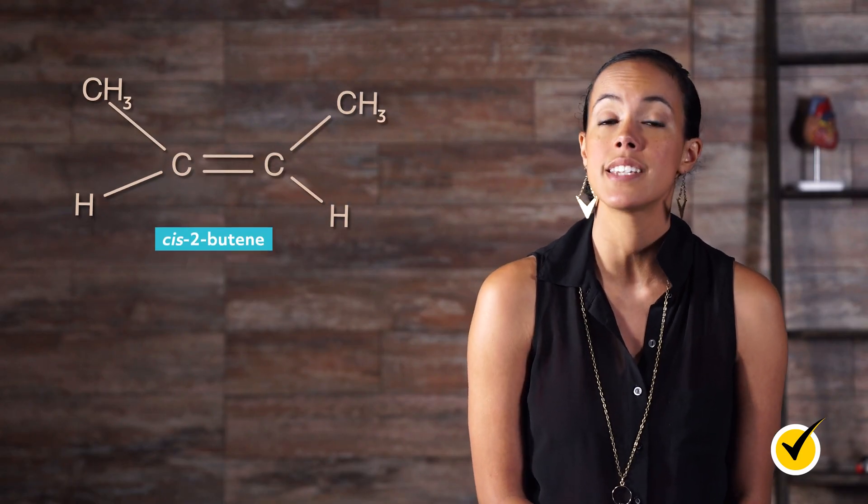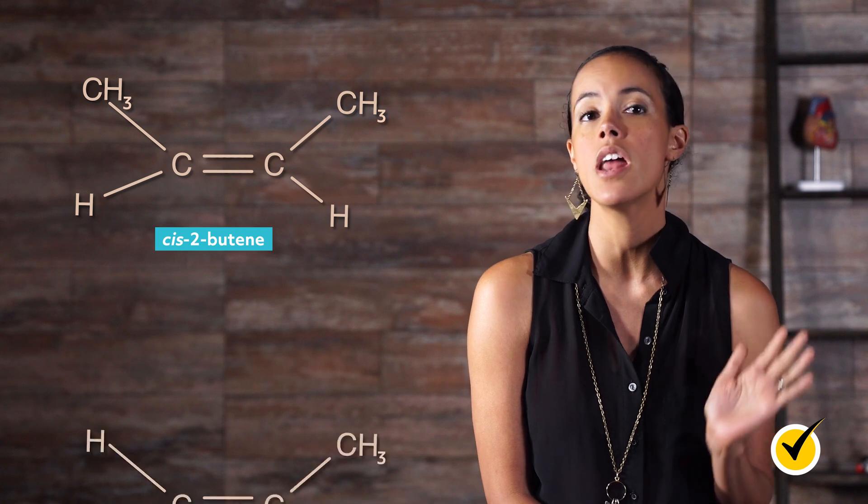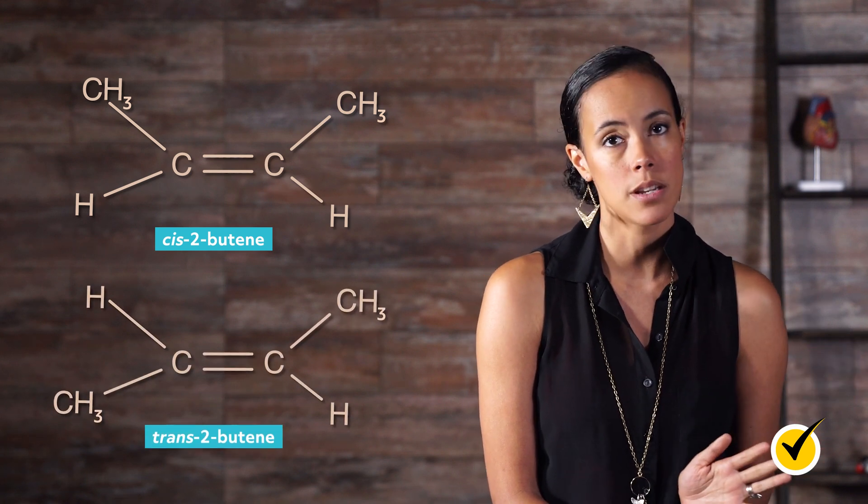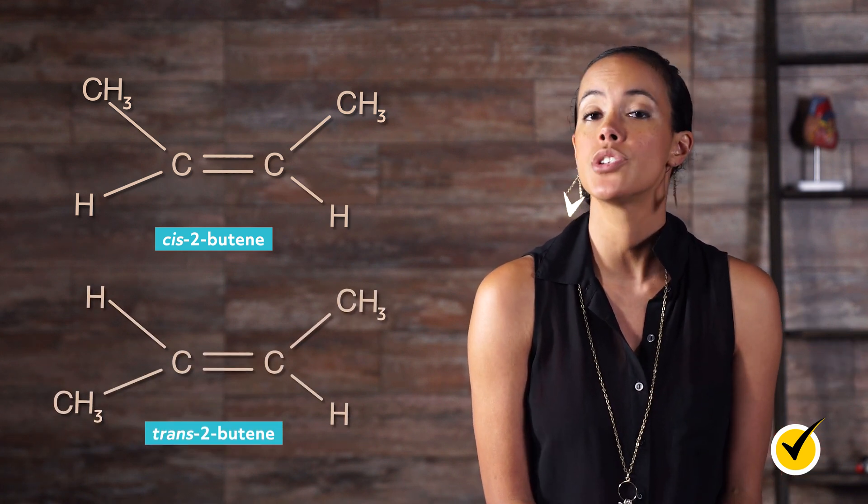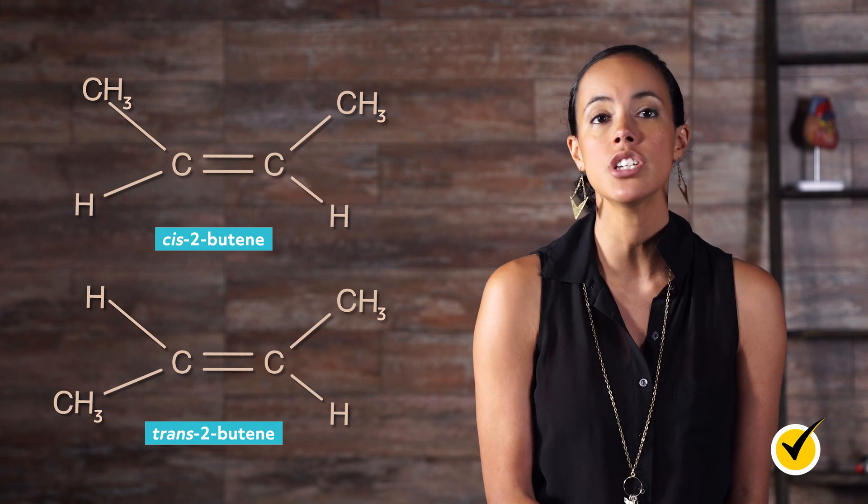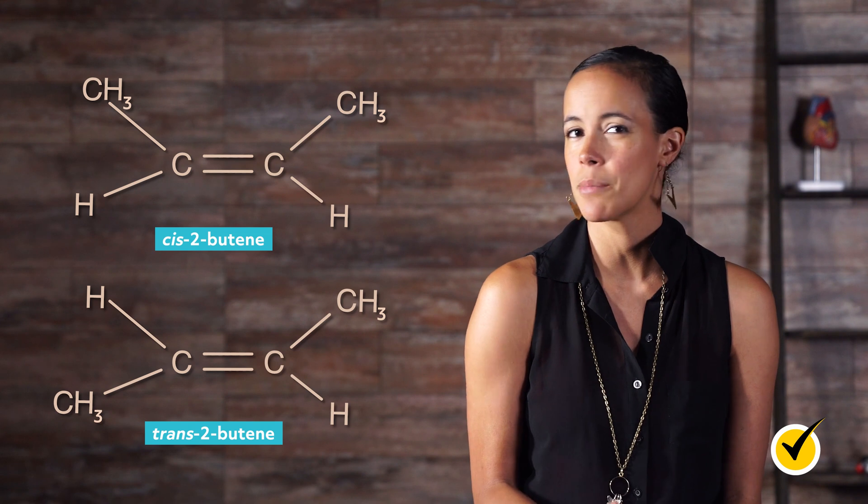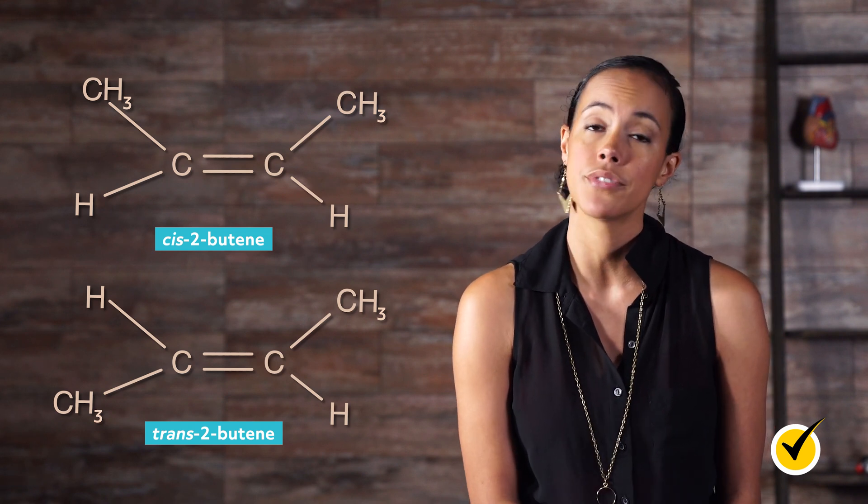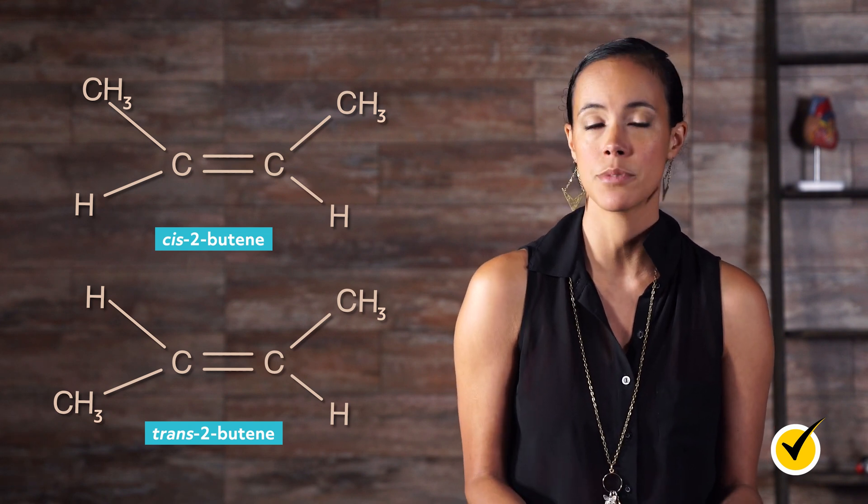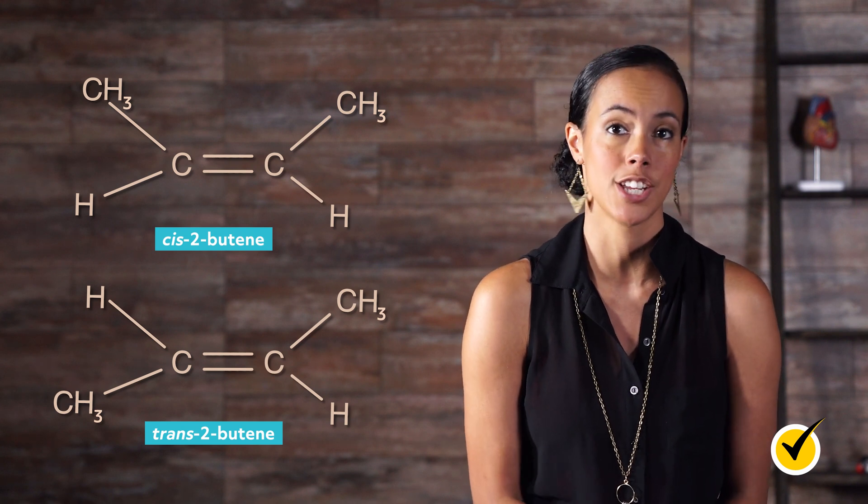Consider 2-butene again. We can draw the structure in two different ways. One where the methyl groups CH3 are on the same side of the double bond and one where they are on the opposite sides of the double bond. To convert between the two structural orientations, energy is required to break the pi bond. So even though these two structures have the same connectivity, these structures are unique and have different physical properties because the atoms are locked into different spatial orientations.